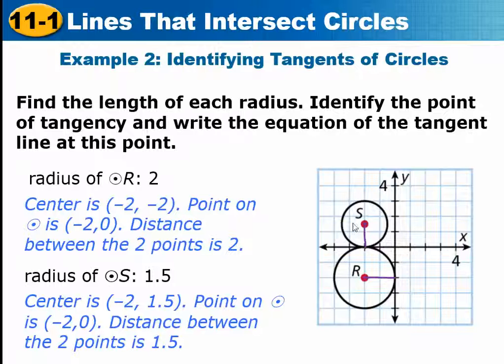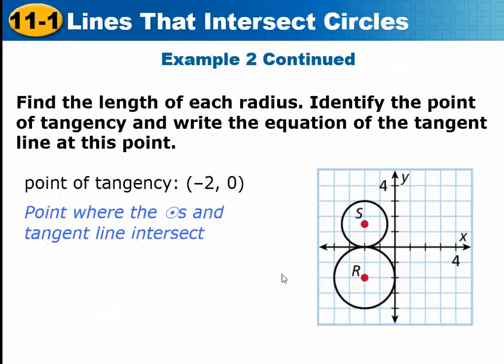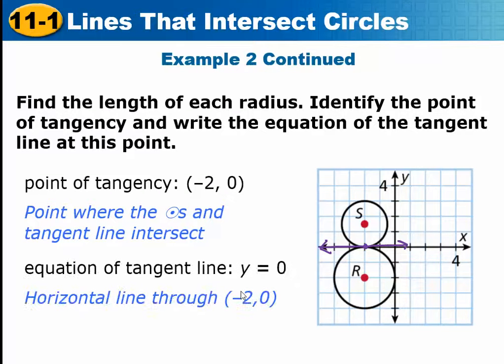You also have to write the equation of the tangent line at this point. The point of tangency is where they just touch each other, which is right here. And the tangent line would be the line that would go through that point like this. Now that's a horizontal line. Every horizontal line has the equation Y equals, and then where it crosses. And that horizontal line is crossing at Y equals 0, so the equation is just Y equals 0.